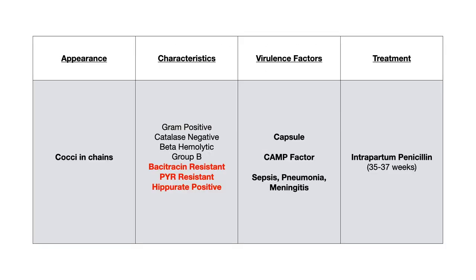Here's your summary slide. This is a coccus that occurs in chains — gram positive, catalase negative, beta hemolytic, group B. The important things to differentiate it from strep pyogenes: bacitracin resistant, PYR negative, and hippurate positive. Remember the Bs for group B strep. Virulence factors: capsule and CAMP factor, which has nothing to do with cyclic AMP. High yield clinical associations: swab pregnant mothers — SPM, sepsis, pneumonia, meningitis. If positive on the rectal and vaginal swab, treat with intrapartum penicillin.